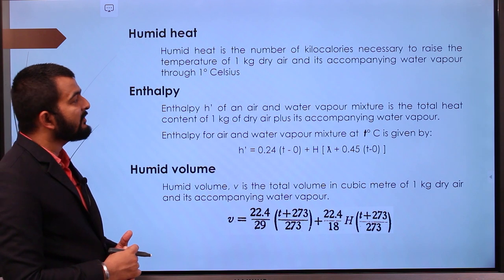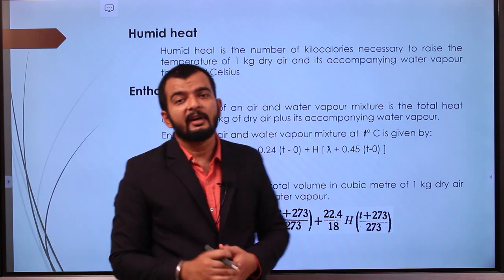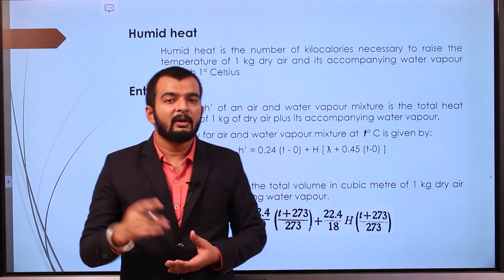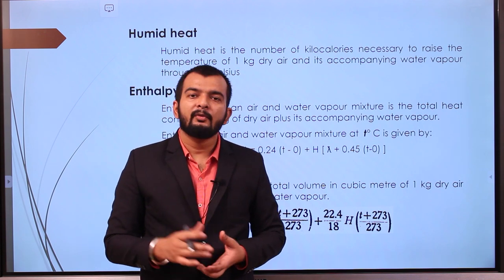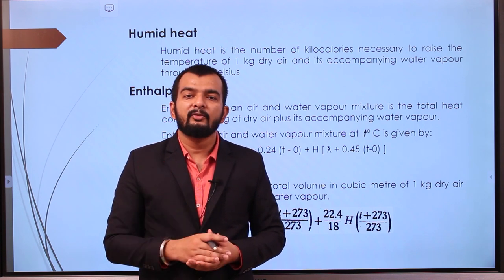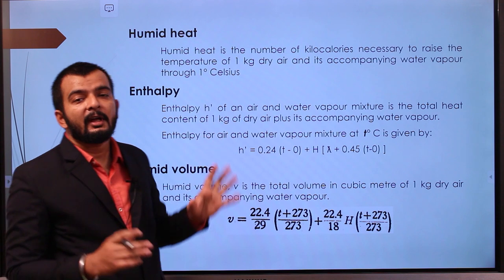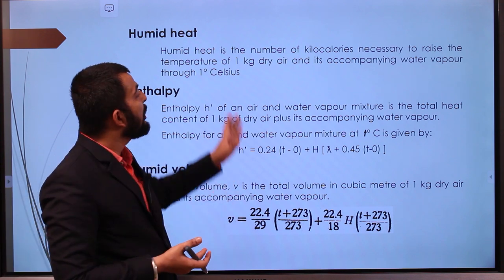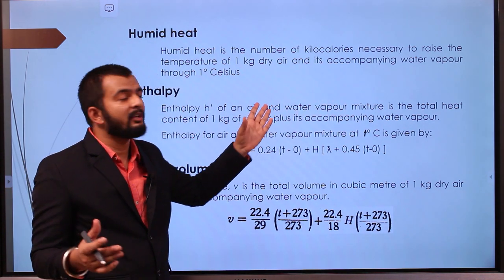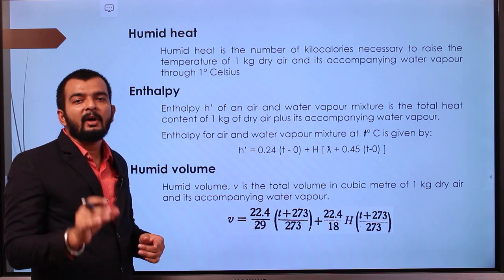Humid heat is the number of kilocalories necessary to raise the temperature of 1 kg of dry air and its accompanying water vapor through 1°C. It is analogous to specific heat, but here we are raising the temperature of an air-moisture mixture. Enthalpy of an air-water vapor mixture is the total heat content of 1 kg of dry air plus its accompanying water vapors at a particular temperature and pressure.